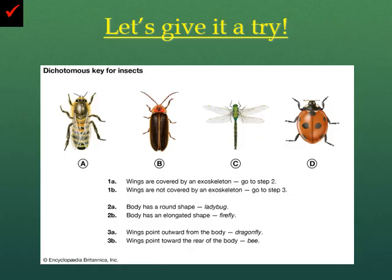So let's go ahead and give this a try. I'm going to ask you to pause after we go through the first one. Let's go ahead and try to figure out what organism A is. We start off at our very first question. So 1A: wings are covered by an exoskeleton, or wings are not covered by an exoskeleton. If we look at the first organism here, we can clearly see that there's no shielding or shell over the wings, so that means we're going to go on to step number three.